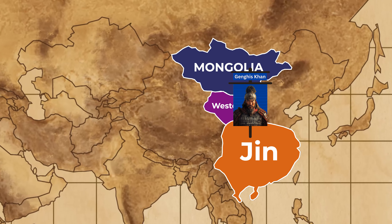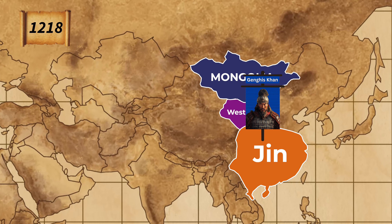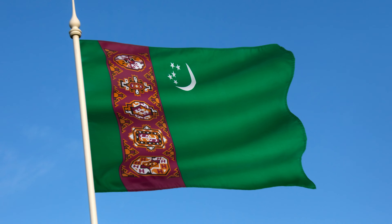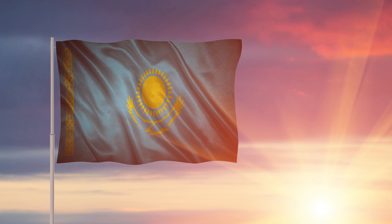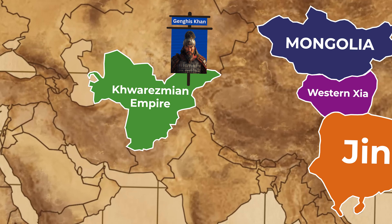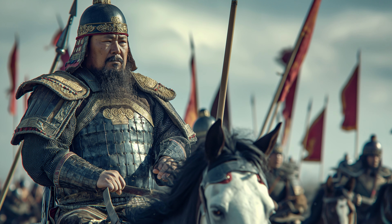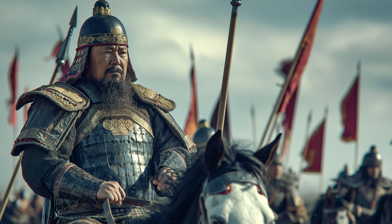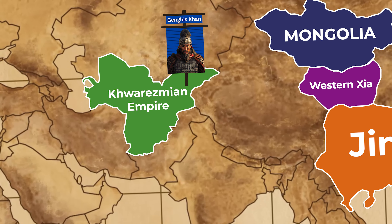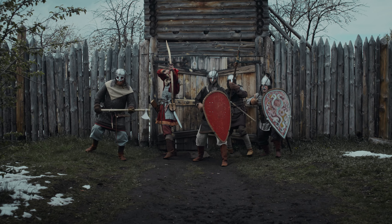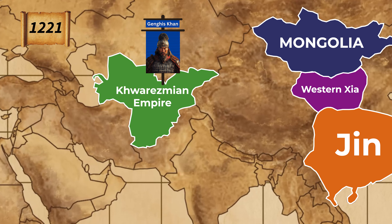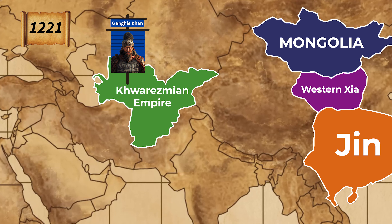With northern China under his control, Genghis Khan looked westward. In 1218 he initiated a campaign against the Khwarezmian Empire, which encompassed modern-day Iran, Turkmenistan, Uzbekistan, and Kazakhstan. The conflict began after a diplomatic incident in which Khwarezmian officials executed Mongol envoys. Genghis Khan's response was swift and brutal — he deployed a large, well-coordinated force that systematically destroyed Khwarezmian cities. The siege of Samarkand in 1220 showcased his power, as Mongol forces used feigned retreats and surprise attacks to capture the city. By 1221, the Khwarezmian Empire was in ruins, further expanding the Mongol Empire.